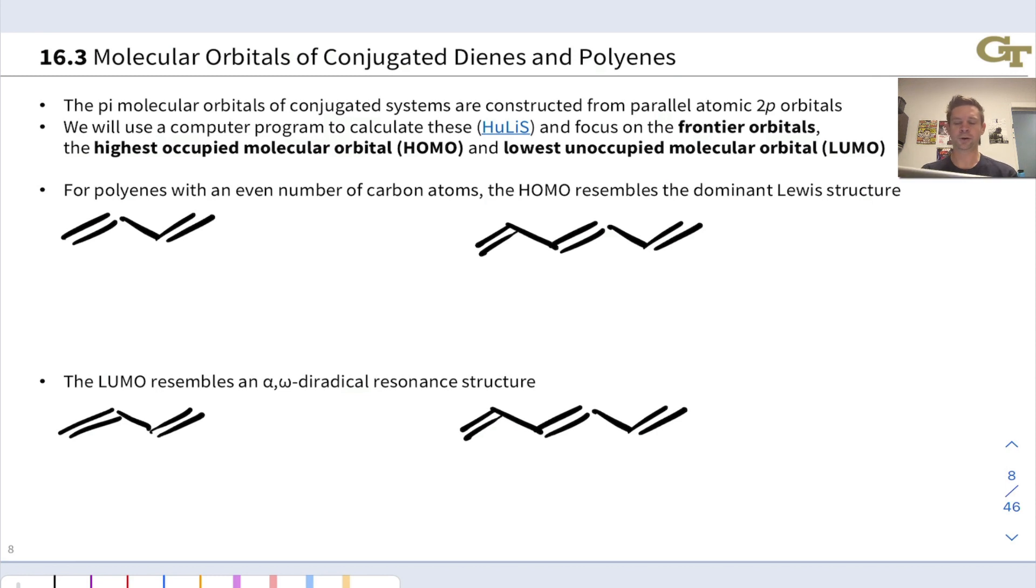Let's start with the HOMO trick. The HOMO resembles the Lewis structure of the molecule with all atoms neutral, that dominant standard Lewis structure with alternating double and single bonds. When we say resembles, we mean there's constructive overlap everywhere we see a double bond in the Lewis structure. For 1,3-butadiene, we see a double bond here, and there's constructive overlap between the p orbitals here. And where we see a single bond, there is a node in the orbital. The HOMO looks like this, and this holds regardless of the length of the pi system.